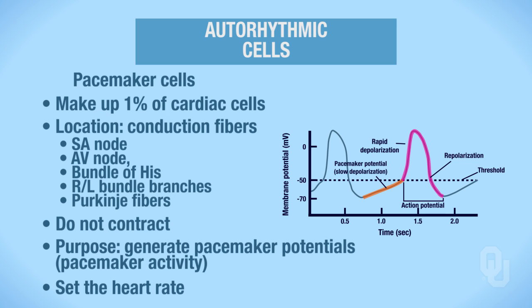For now, you need to know that the autorhythmic cells are located in the conduction system. Remember, you'll also hear them called pacemaker cells, so be sure you know both terms. Autorhythmic cells set the heart rate by generating pacemaker potentials.